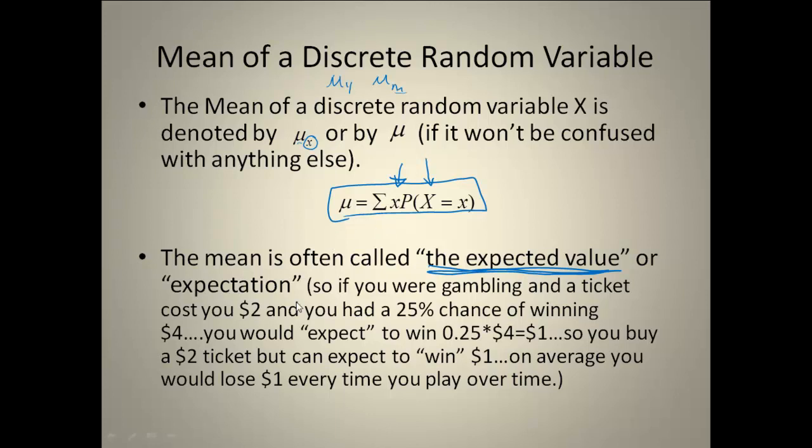If you're gambling and a ticket costs you $2 and you had a 25% chance of winning $4, you would expect to win $1 every time you bought a ticket. But now keep in mind, you buy a $2 ticket and you only win $1, so basically you're going to lose $1 every time you buy a ticket for this particular example.